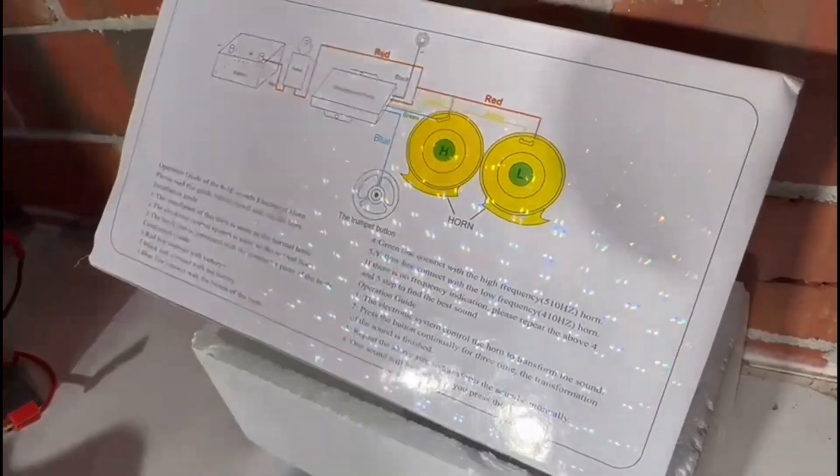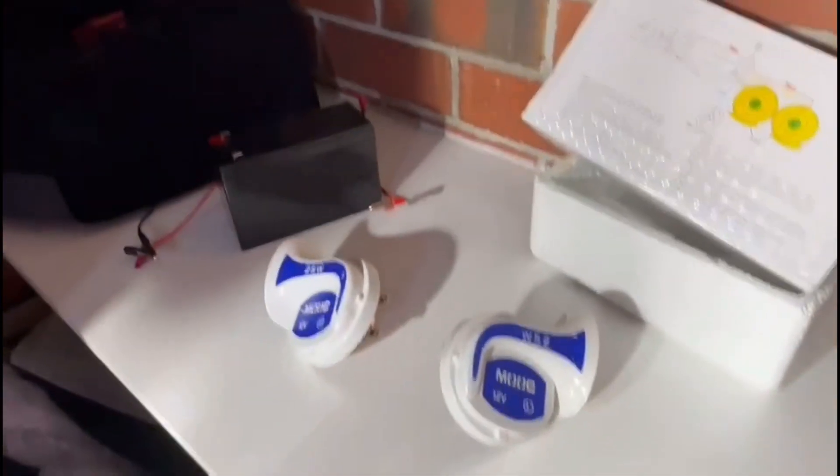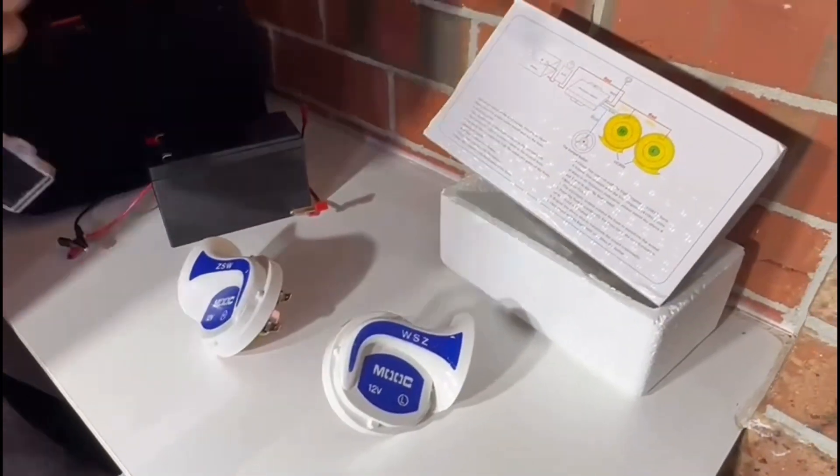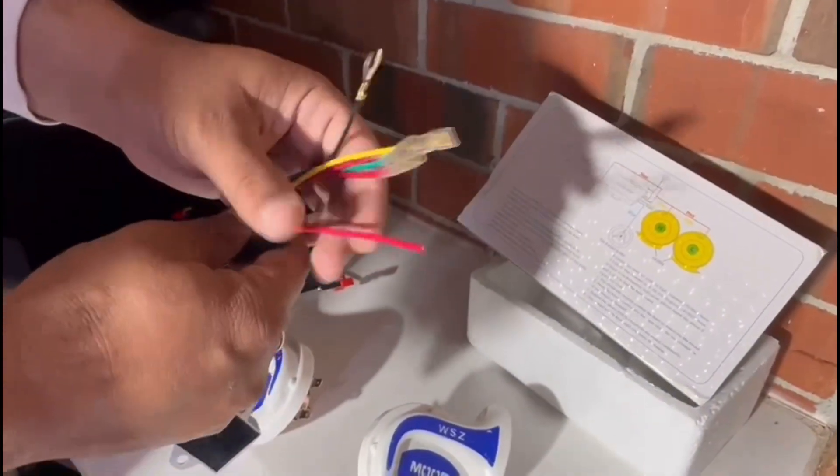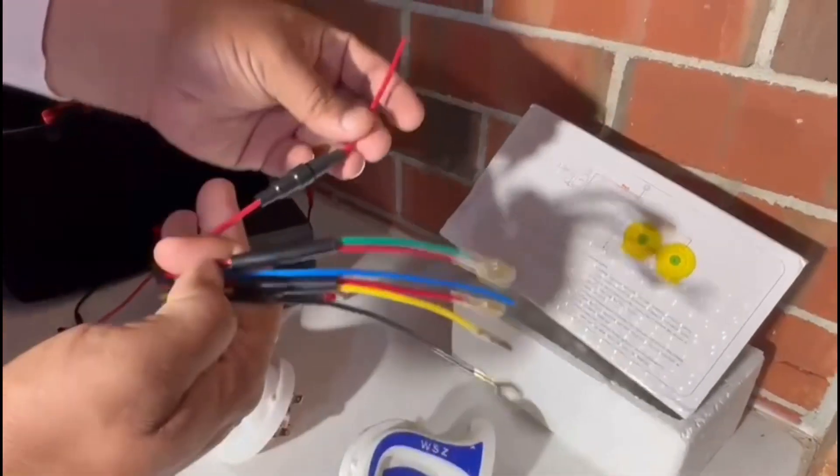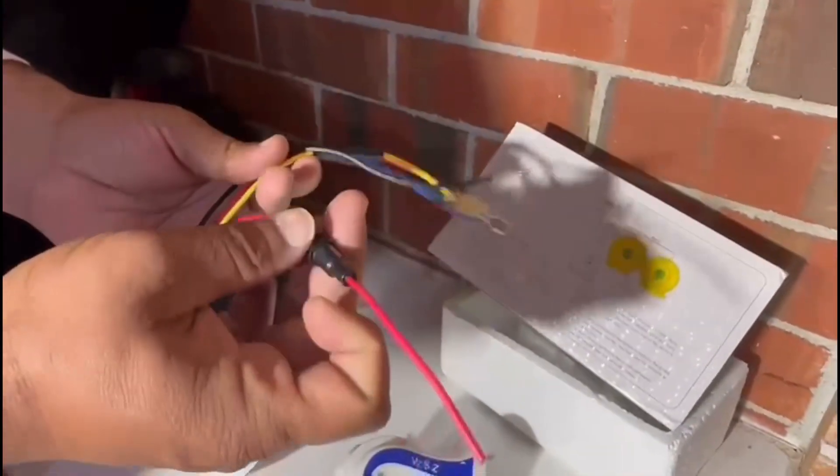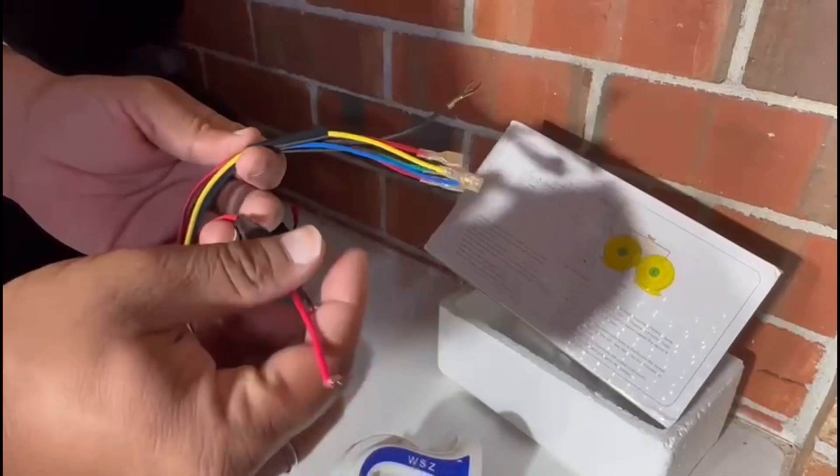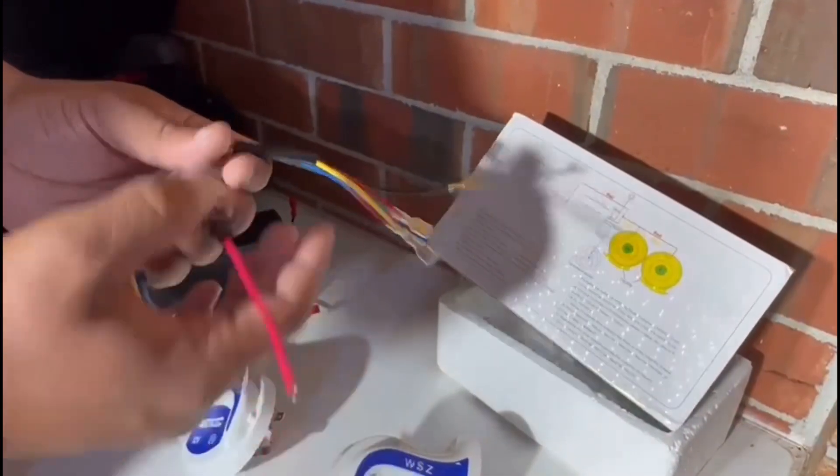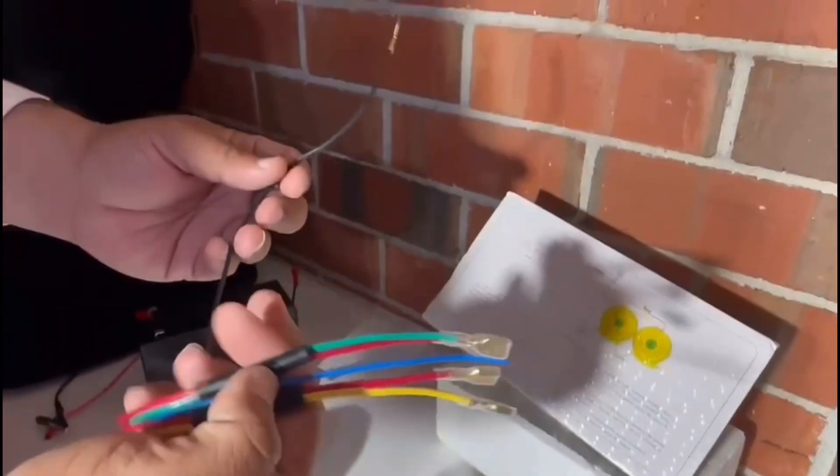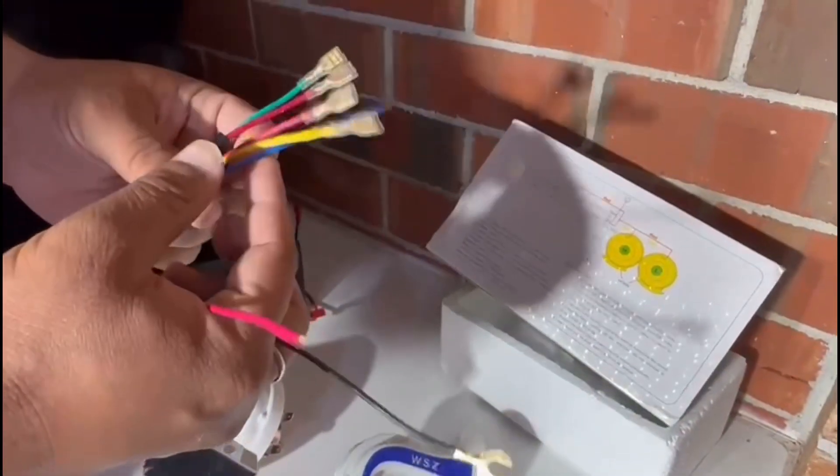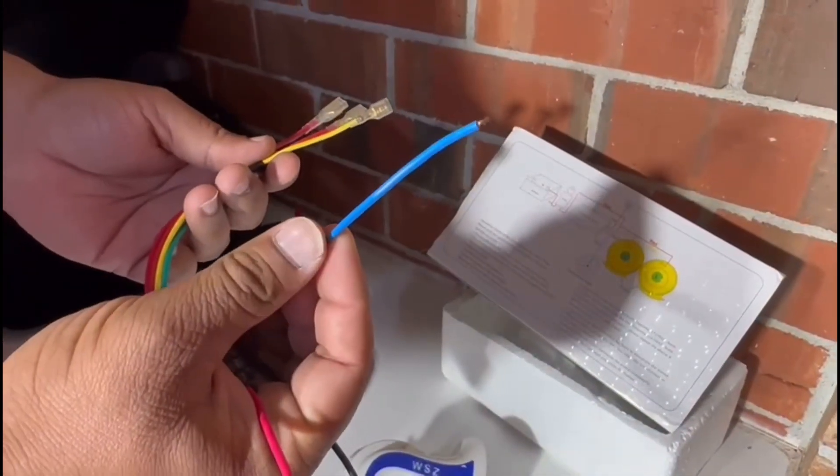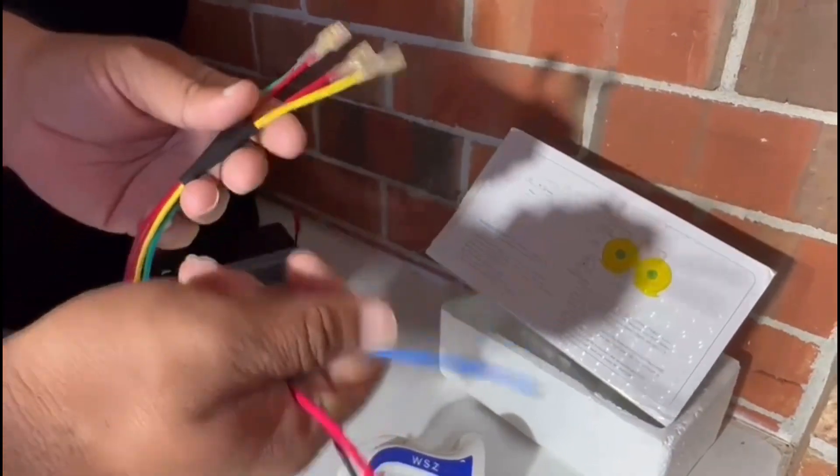Alright guys, let's start doing the wiring. It's got seven wires. Red one always goes to the positive of your battery or your car horn button. Black one is the negative. Yellow one is the melody wire, the blue one is the button wire, and two wires here are for high and low horns.